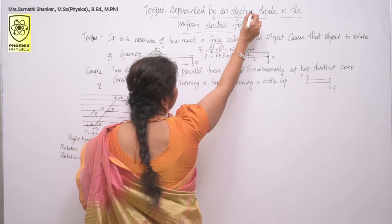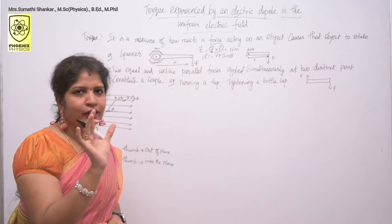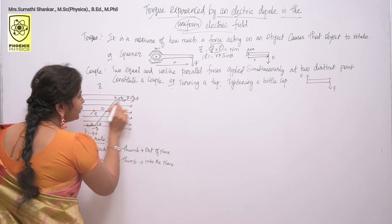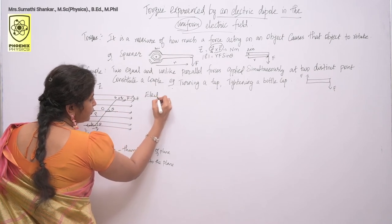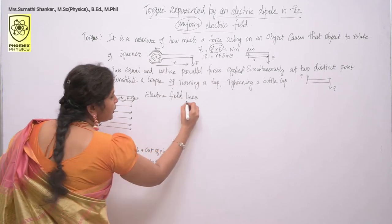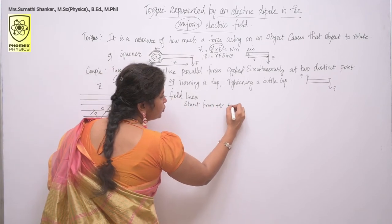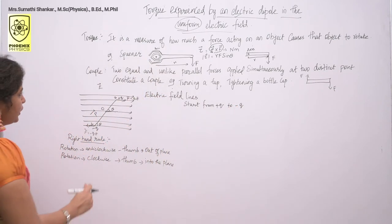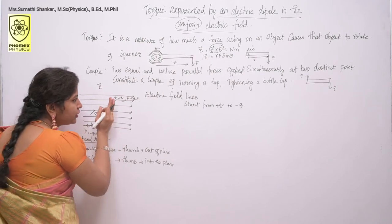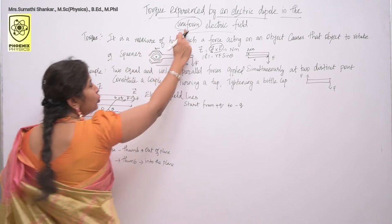You know torque and you know electric dipole. Two equal and opposite charges separated by a distance constitute an electric dipole. What about uniform electric field? These horizontal lines are called electric field lines. Electric field lines start from plus Q charge and end at minus Q charge. These electric field lines are equally spaced and point in the same direction — this kind of field is called uniform electric field.